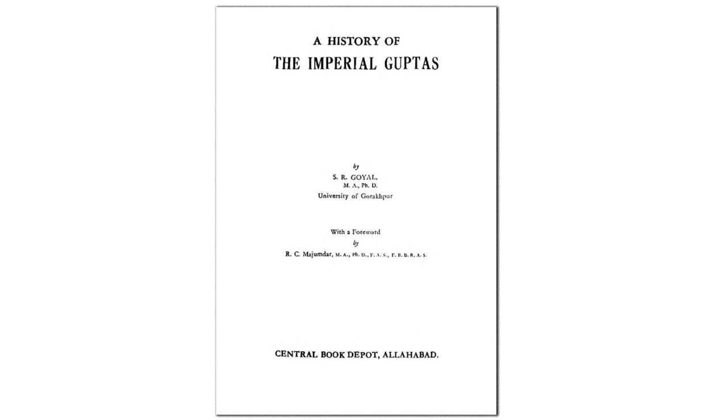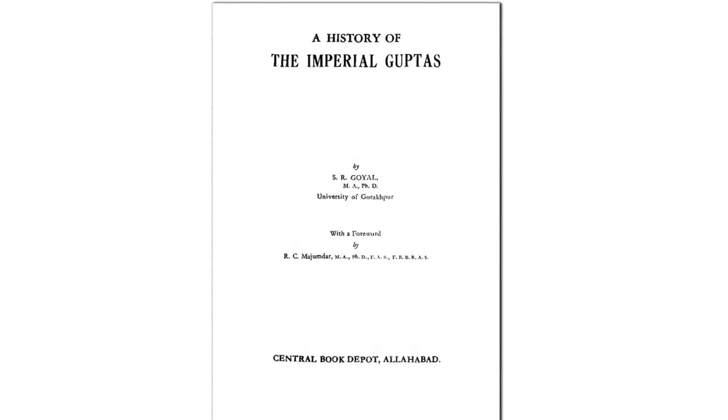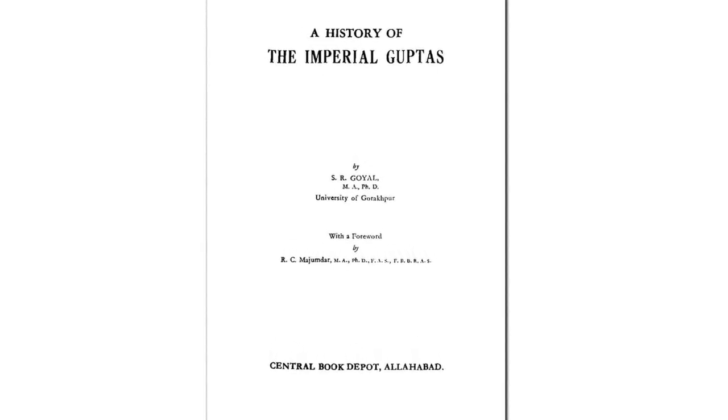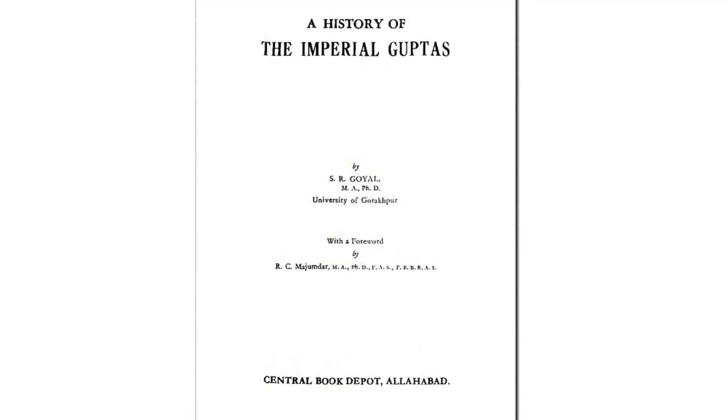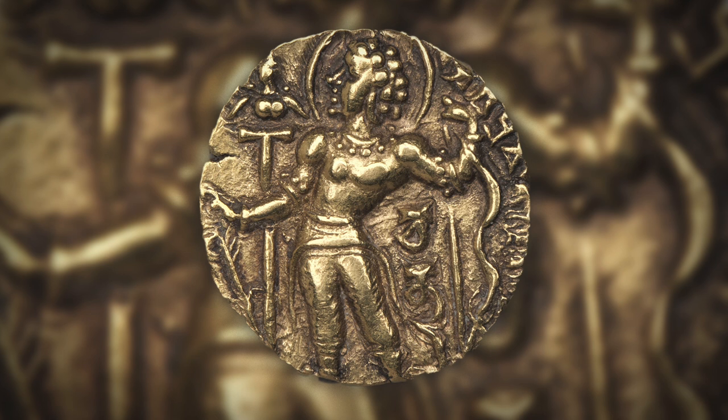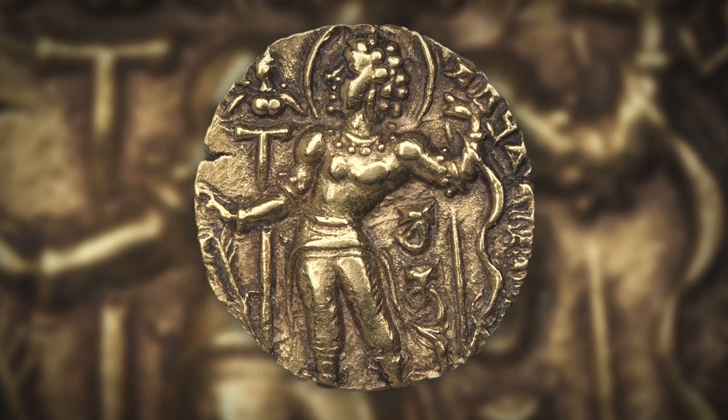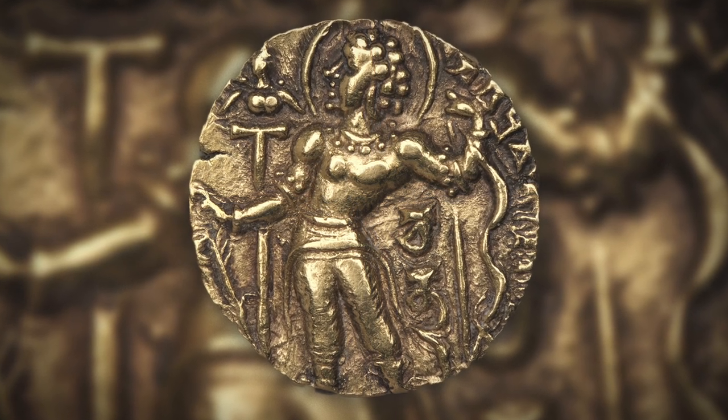When we look at the history of the Gupta Empire, one of the great books on this is Sriram Goyal's 'A History of the Imperial Guptas.' In this book, Sriram Goyal has talked about a great deal on Chandragupta II. He describes Chandragupta II as an able and energetic ruler, but he also believes that Chandragupta II committed a mistake that led to the decline of the Gupta Empire.